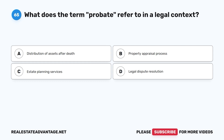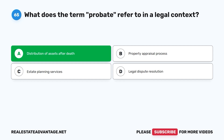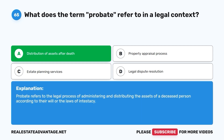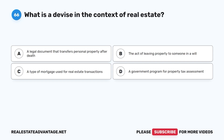Question 65: What does the term 'probate' refer to in a legal context? A. Distribution of assets after death. B. Property appraisal process. C. Estate planning services. D. Legal dispute resolution. The correct answer is A, distribution of assets after death. Probate refers to the legal process of administering and distributing the assets of a deceased person according to their will or the laws of intestacy.